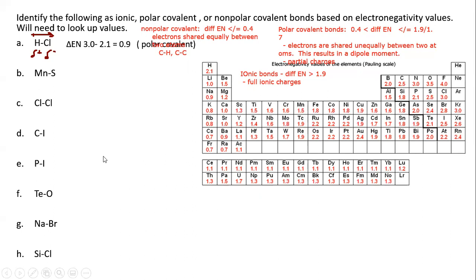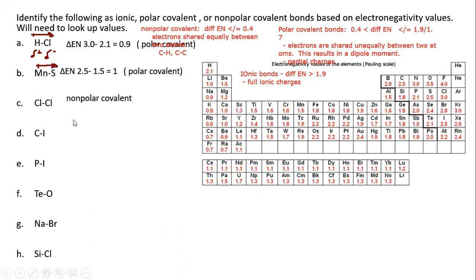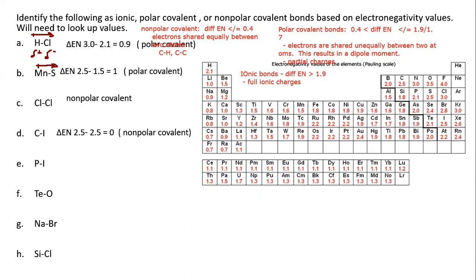The manganese–sulfur bond has an electronegativity difference of 1.0, so it's classified as polar covalent with a dipole moment. A chlorine–chlorine bond is nonpolar covalent because the difference is zero — same element. The carbon–iodine bond also has a difference of zero, so it's a nonpolar bond where electrons are shared equally.